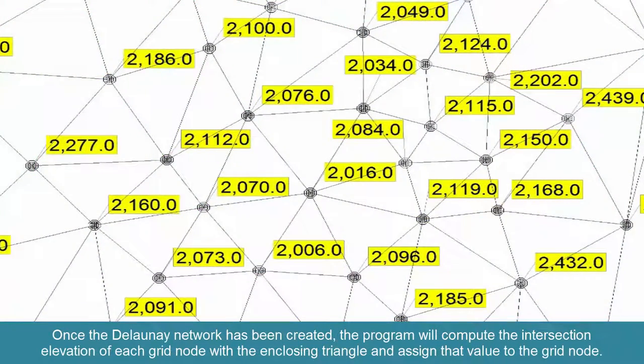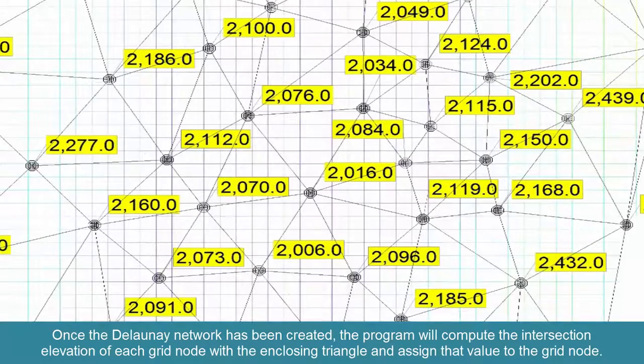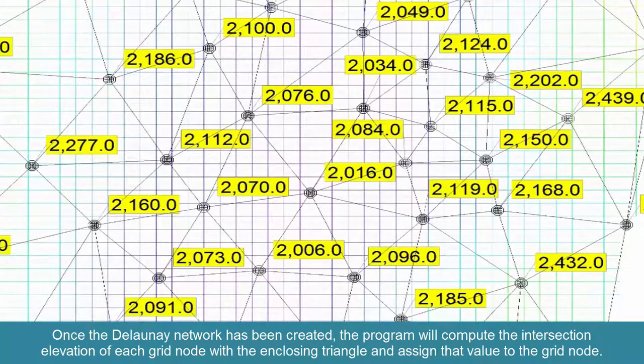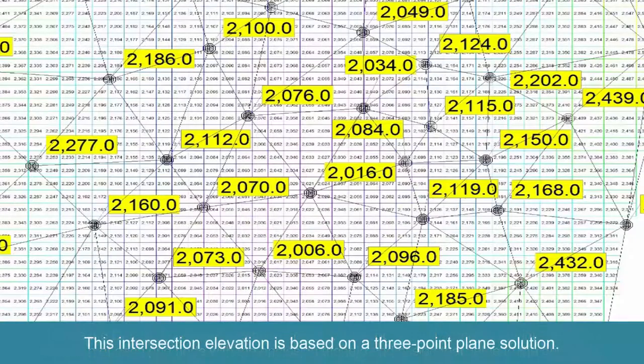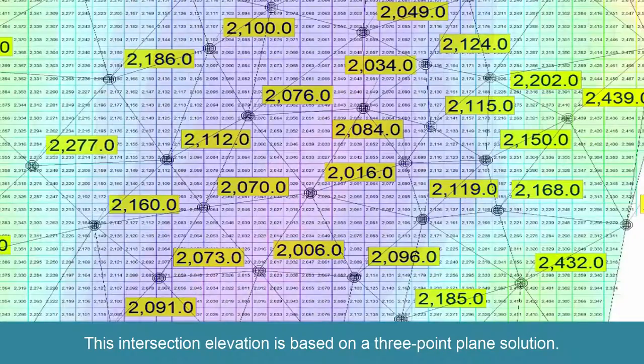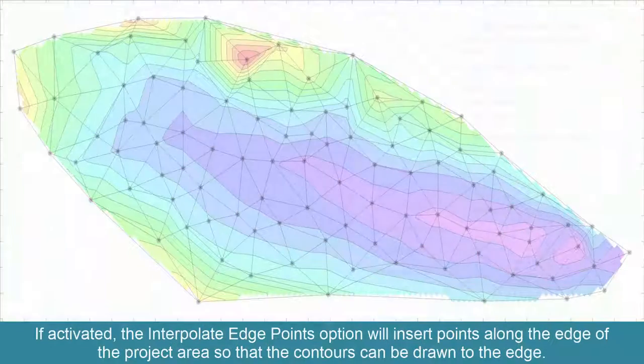Once the Delaunay network has been created, the program will compute the intersection elevation of each grid node with the enclosing triangle and assign that value to the grid node. The intersection elevation is based on a three-point plane solution.